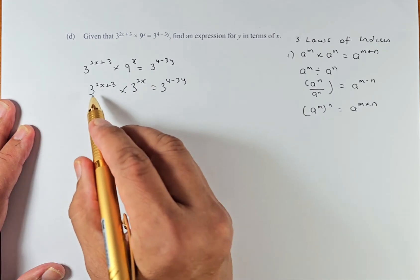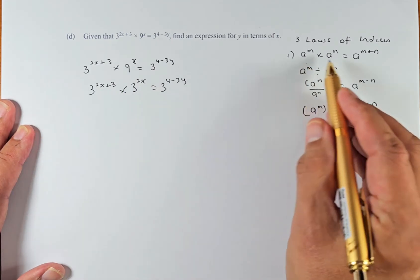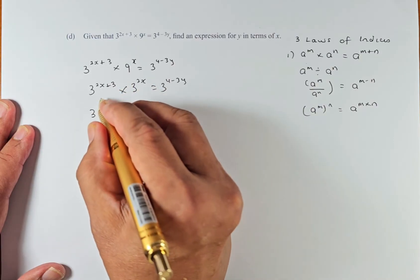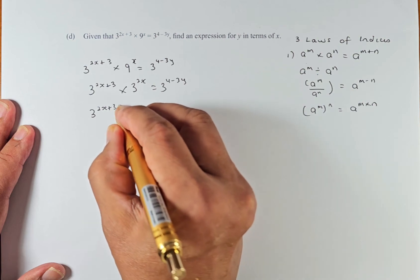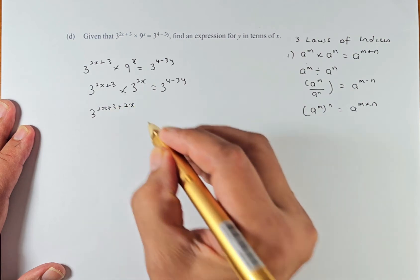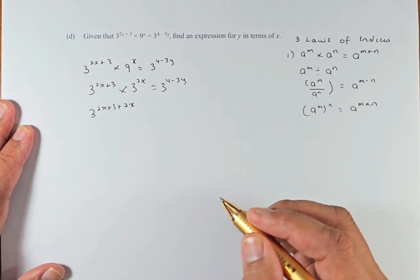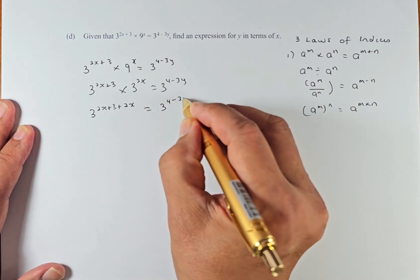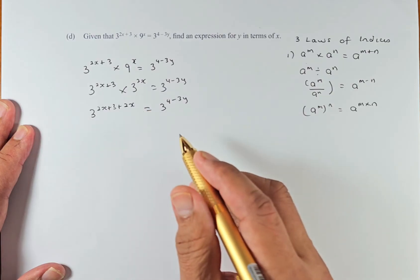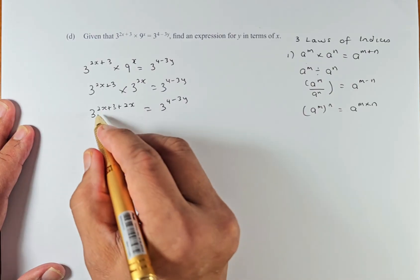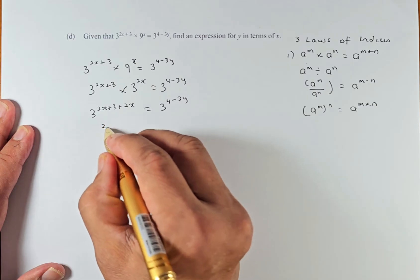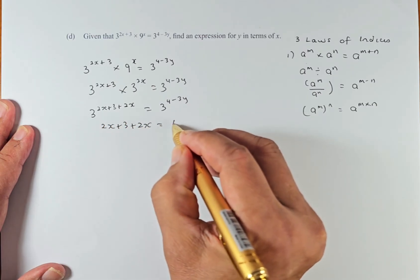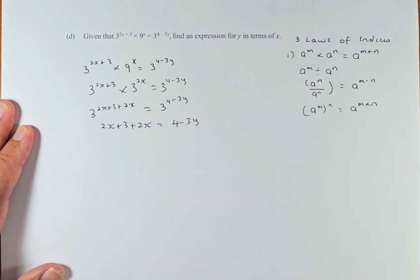Now we're going to add, because as I said, when you have the same base a, you're going to add the powers. So this becomes 3^(2x+3+2x). That's on the left-hand side and the right-hand side remains 3^(4-3y). Because if they are both the same base 3, we can just put the top part equal to the top part.